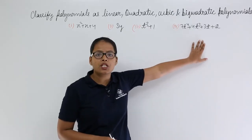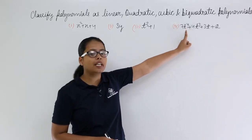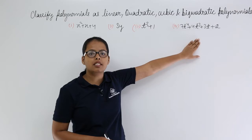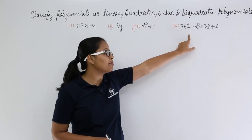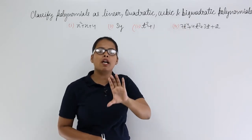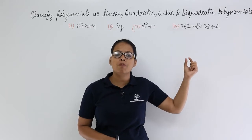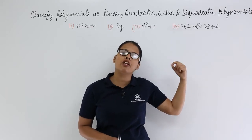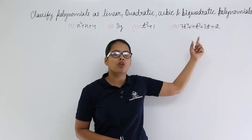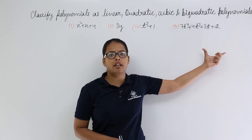Here in this expression you can see that the variable is t and the highest power in t is 4. When you multiply two quadratic equations the highest power you get after multiplication will be 4. So this is bi-quadratic.